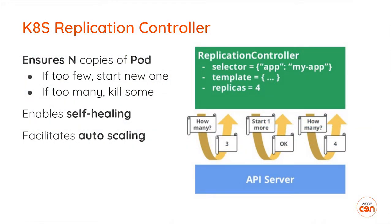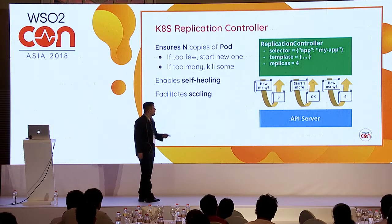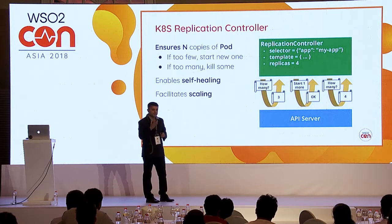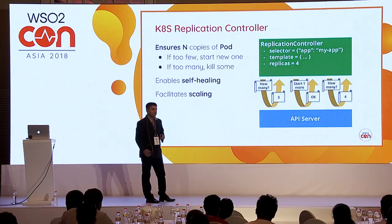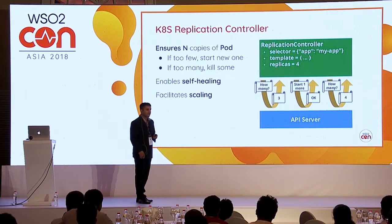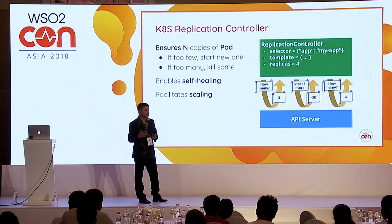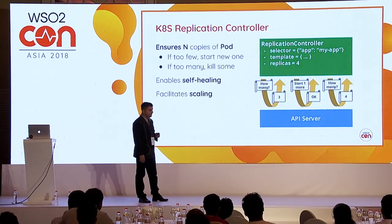The replication controller ensures the defined number of pods are running in your environment. For example, if the defined number is 4 and a pod goes away, the replication controller will spin up another pod to maintain that count of 4. It can also be used for manual scaling — from a single command you can scale up or scale down using the replication controller.